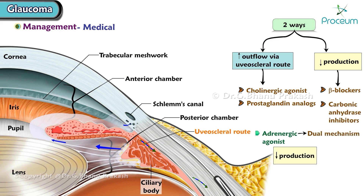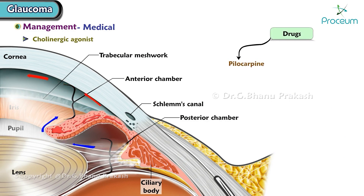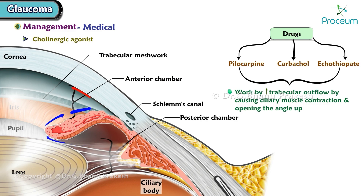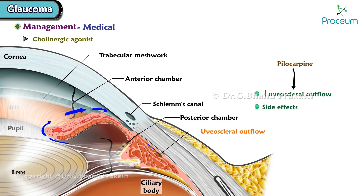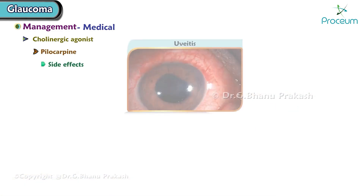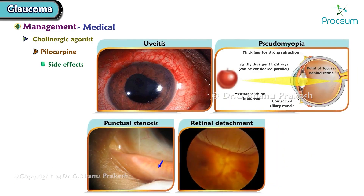Cholinergic agonist drugs include pilocarpine, carbachol, and echothiophate. These drugs work by increasing trabecular outflow by causing ciliary muscle contraction and opening the angle. It is important to note that pilocarpine decreases uveoscleral outflow.